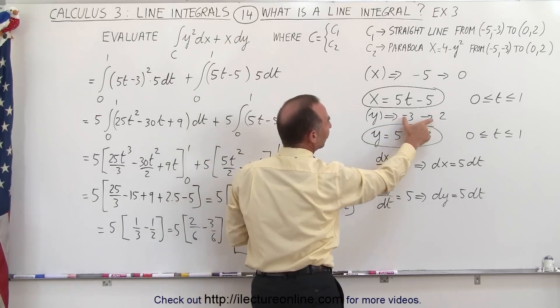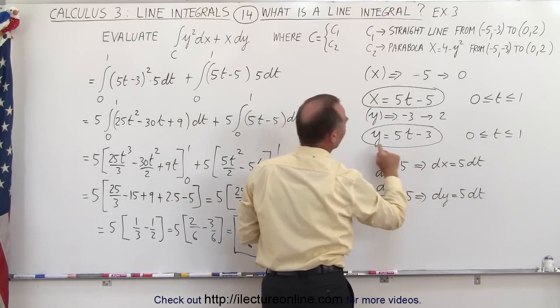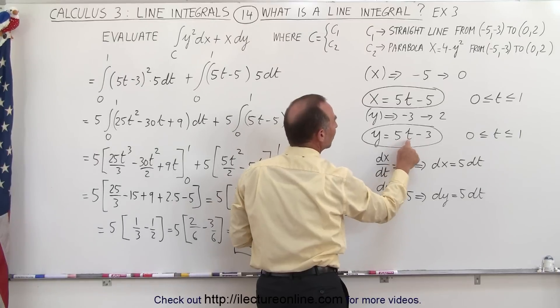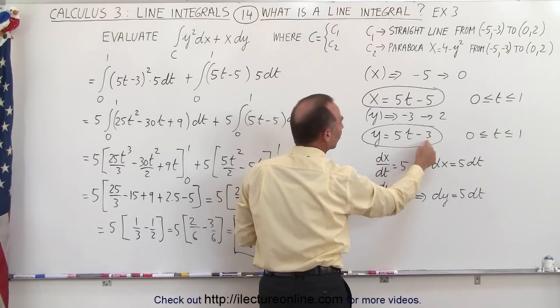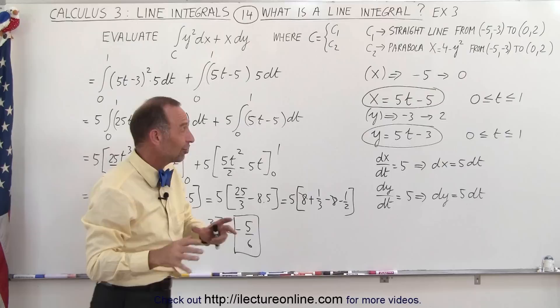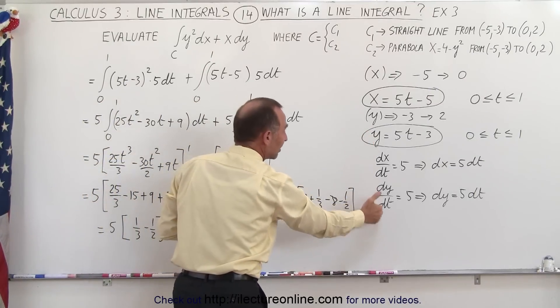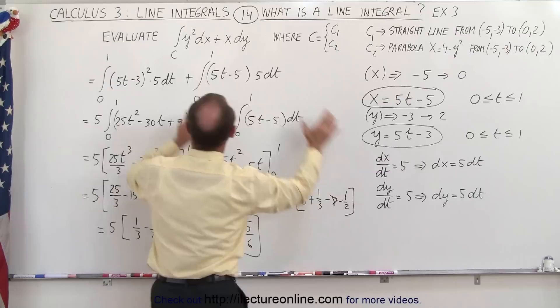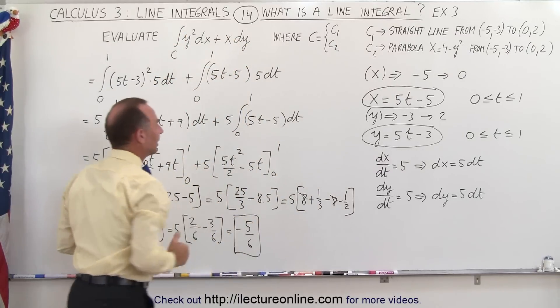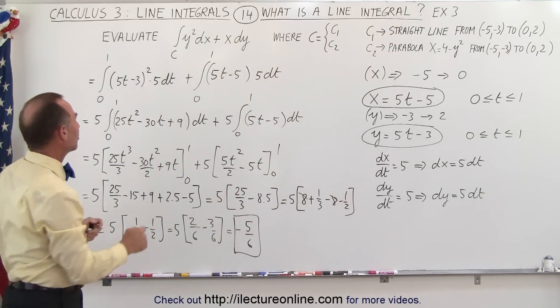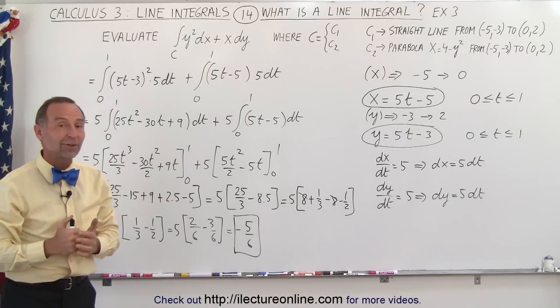Again, the change in y is 5. We want the change in t to be 1, so y equals to 5t, but when t is equal to 0, y is minus 3. So that's how we get our parametric equations. That's usually the toughest part of the problem. Once we have that, we can solve for the dx dt's and dy dt's, plug everything into the equation, and then integrate using the limits for t from 0 to 1. And that's how it's done.